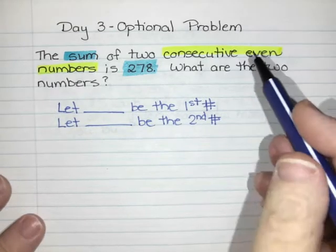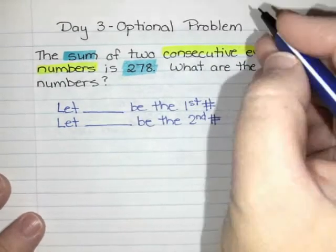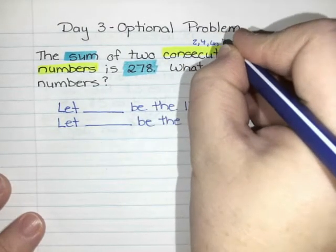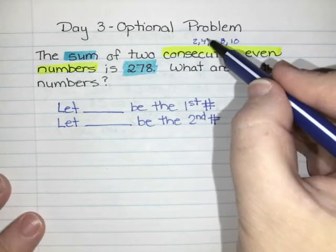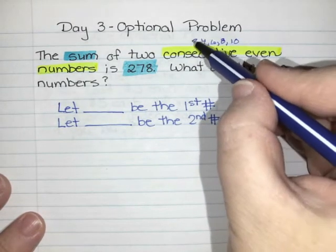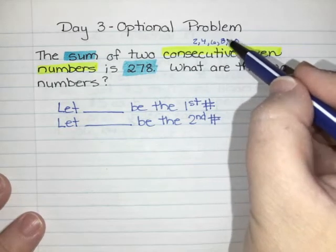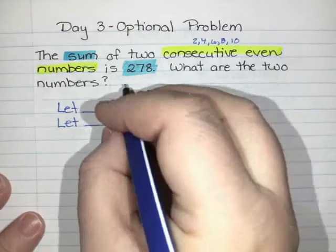When they are consecutive even numbers, consecutive even numbers are things like 2, 4, 6, 8, 10. So all of these numbers are two digits apart. I would have to do 2 plus 2 to get 4, 4 plus 2 gives 6, 6 plus 2 is 8, 8 plus 2 is 10. So if I let my first number be x, my second number should be two numbers bigger.